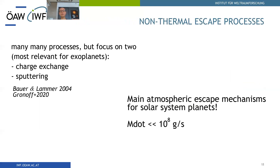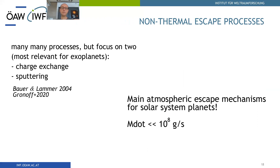Now let's come to the non-thermal escape processes. There are a very large number of non-thermal escape processes, but here I will focus on the two most important ones for exoplanets. In general, non-thermal escape processes are the most important escape processes for solar system planets, with typical mass loss rates less than 10^8 grams per second — which is a hundred to a thousand times less than thermal escape processes for close-in exoplanets. The two non-thermal escape processes I will discuss are charge exchange and sputtering.